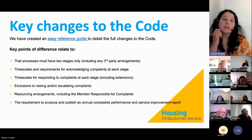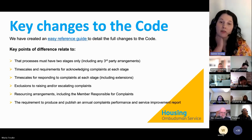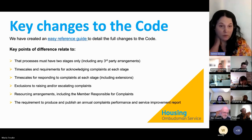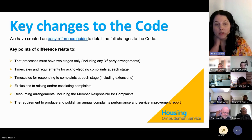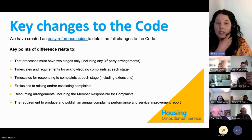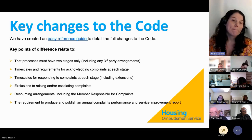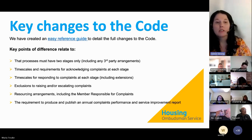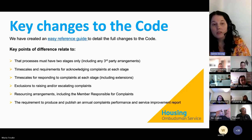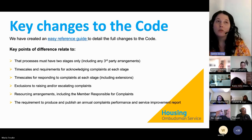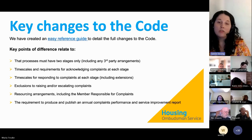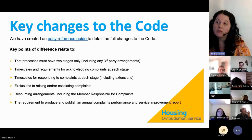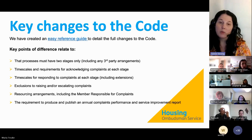Key changes in the code starting 1 April 2024: there is an easy reference guide on our website to help you see the differences. Key points include that landlords' complaints policies must have two stages only — no longer any informal stages or third stages. This also applies where a landlord chooses to use a third party to handle part of its complaints; that third-party involvement must be part of the two-stage process.